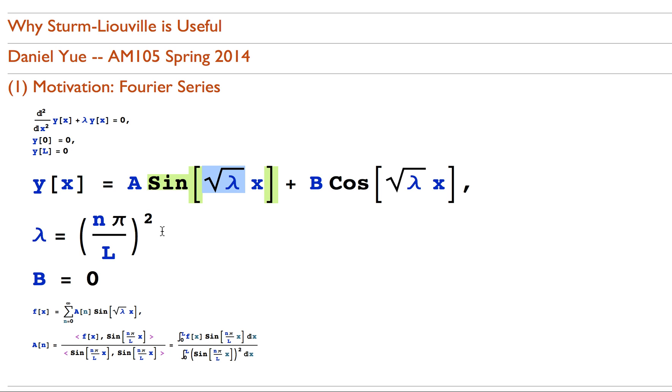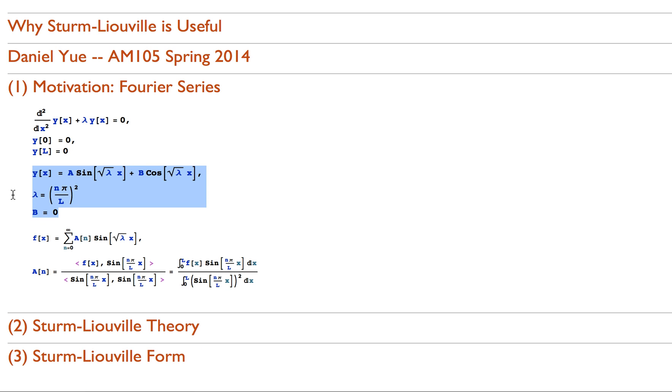If you impose the boundary conditions that it needs to be zero on the edges, then you get that eigenvalues are n pi over l squared, where n is some integer. And then further imposing the boundary conditions, if you plug in zero, you can easily see that the coefficient of cosine in this case is zero, but that is not necessarily needed in general for Fourier series.